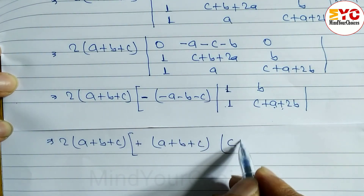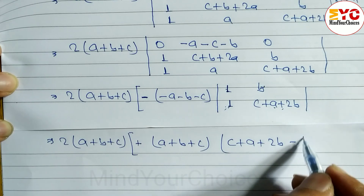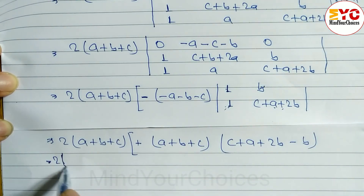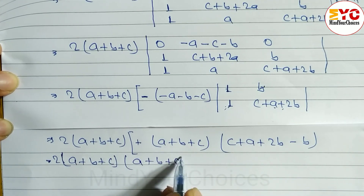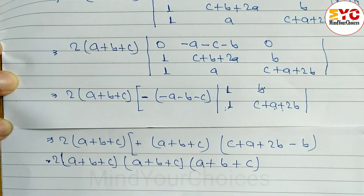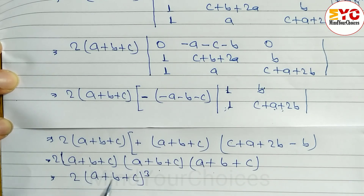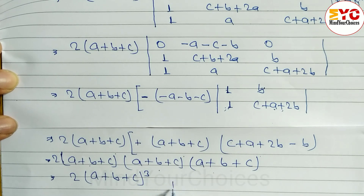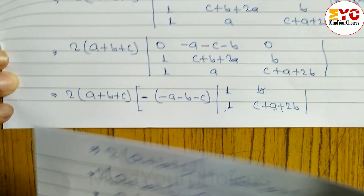Finding the determinant: the main diagonal product is C+A+2B, minus the non-diagonal product. After simplification we get 2(A+B+C) × (A+B+C) × (A+B+C), which equals 2(A+B+C)³ — since we have (A+B+C) appearing three times with exponents adding to 3. This equals the RHS, so the proof is complete.